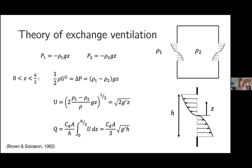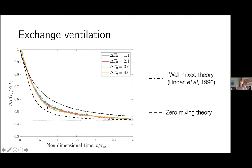Here are some experimental results — mean temperature in the room measured using a vertical array of thermocouples, divided by the initial temperature difference. All results collapse onto a line when rescaled by an exchange flow timescale. The different colored lines represent different initial temperature differences. I've got two models: the first, due to Paul Linden in 1990, assumes inflow through the window mixes perfectly with all the fluid below the top of the window.